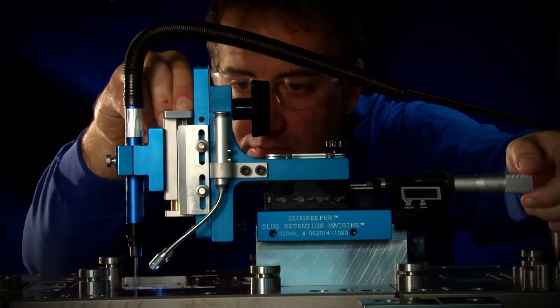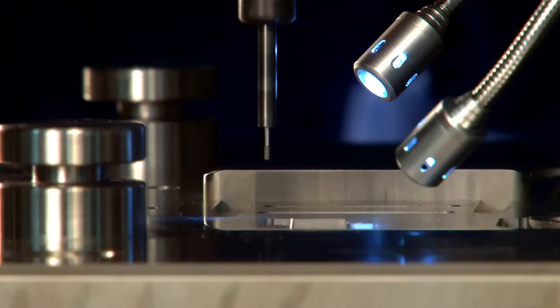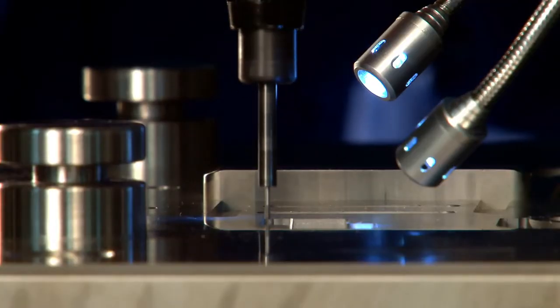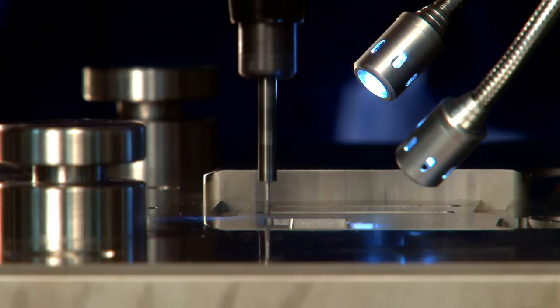The retention grooves can be machined into the die openings while the die is still in the press, resulting in even greater savings by eliminating the need to remove the die from the press, disassemble it and return it back to the press.